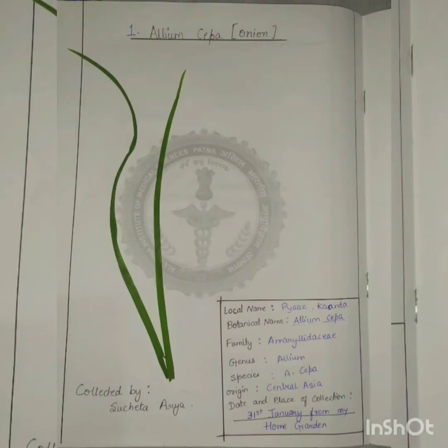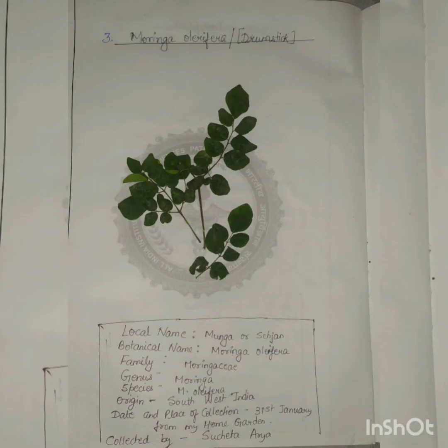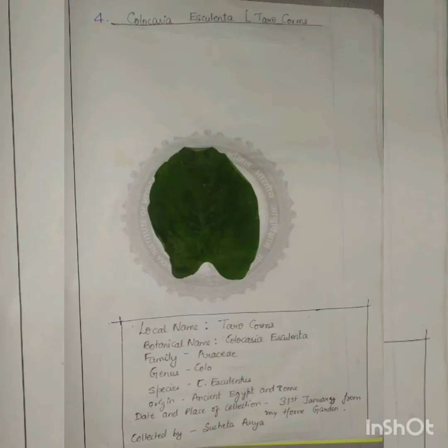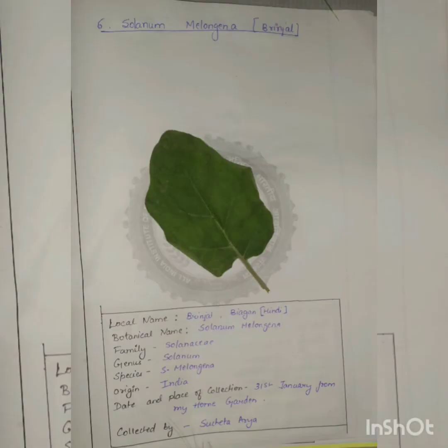Now please have a look at all the plants I have collected. First one is Luffa cylindrica, also known as Luffa aegyptiaca, then Moringa oleifera — drumstick — then Colocasia esculenta, then Solanum lycopersicum known for tomato, and Solanum melongena — the leaf of brinjal crop.